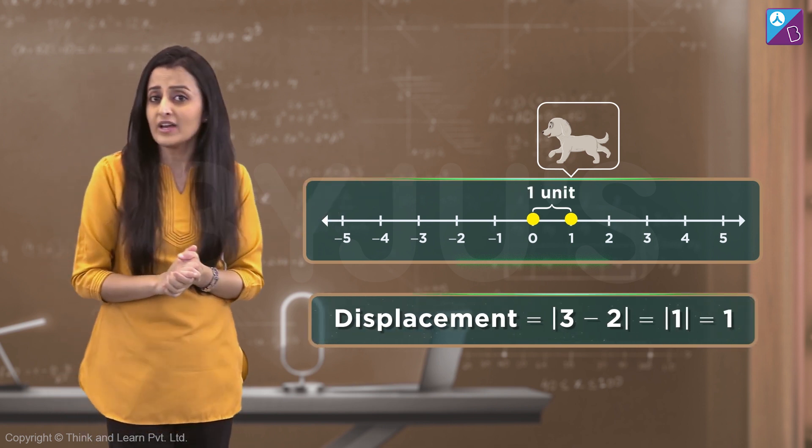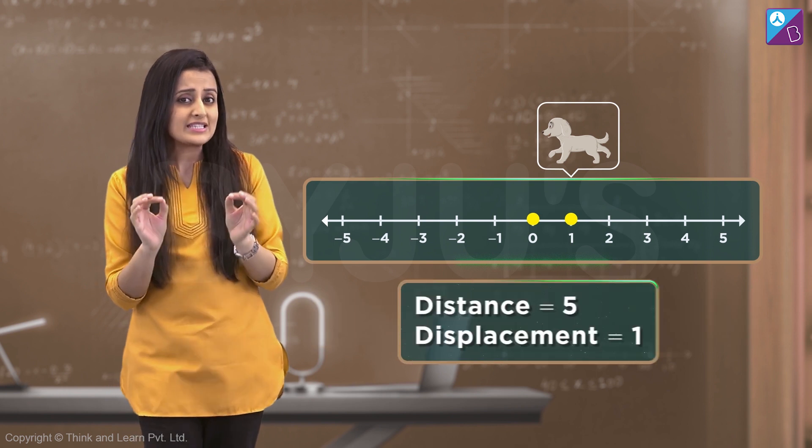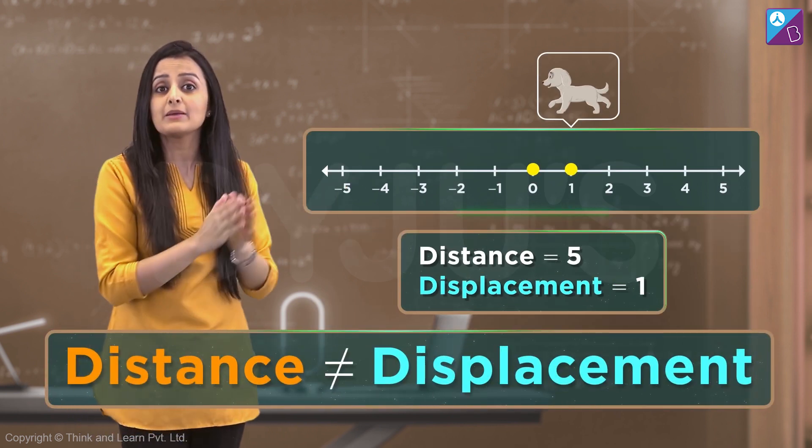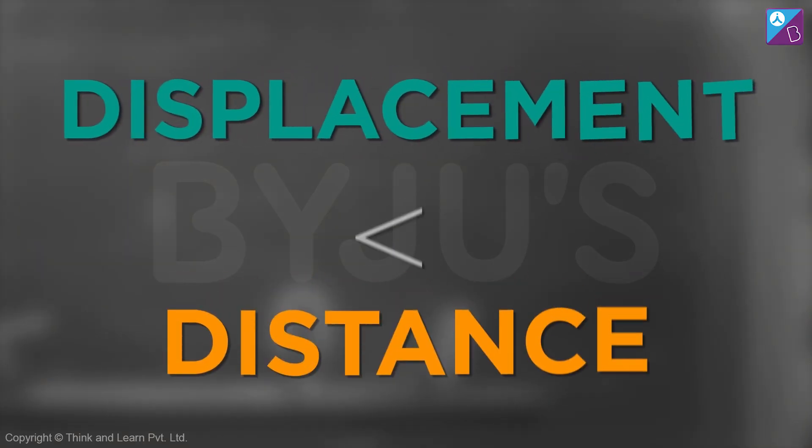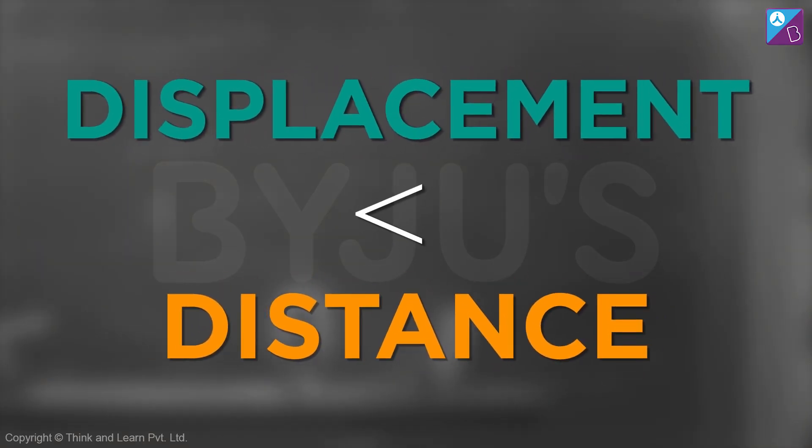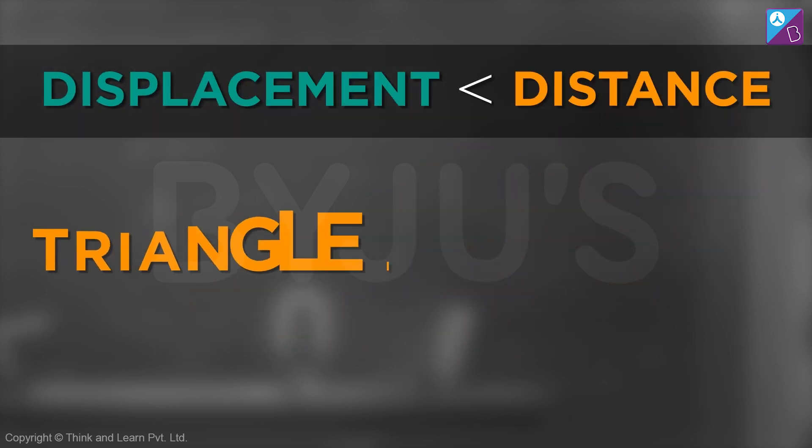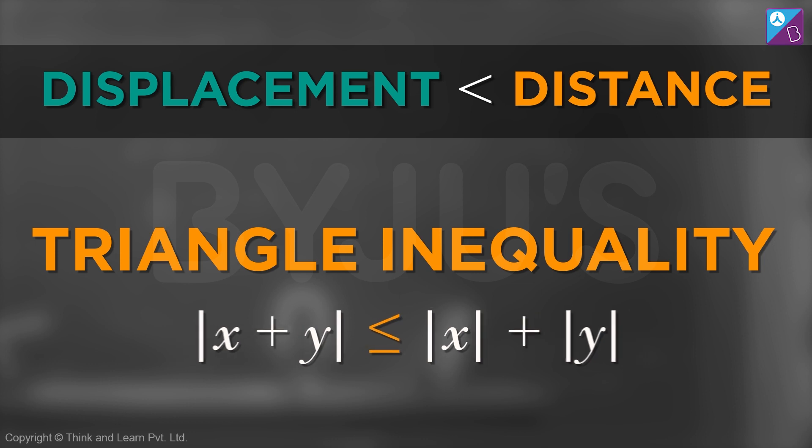As we can see, the displacement is not the same as distance. In fact, here, displacement is less than the distance. And this is where the justification of triangle inequalities has been done.